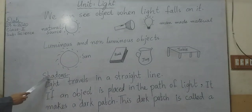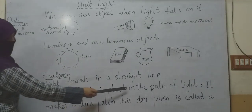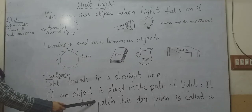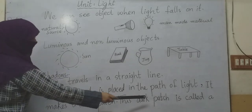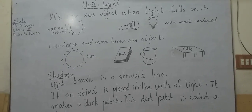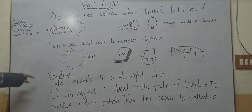How is a shadow formed? If an object is placed in the path of light, it makes a dark patch. This dark patch is called a shadow. When an object comes in the path of light, it will make a dark patch, and that dark patch is called shadow.